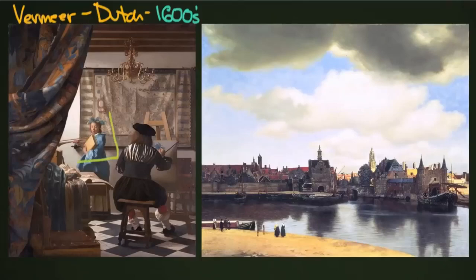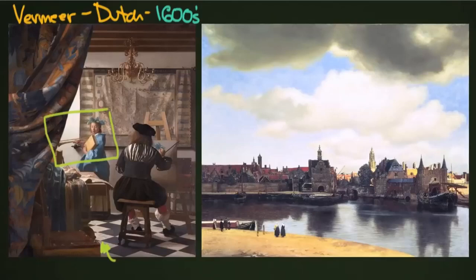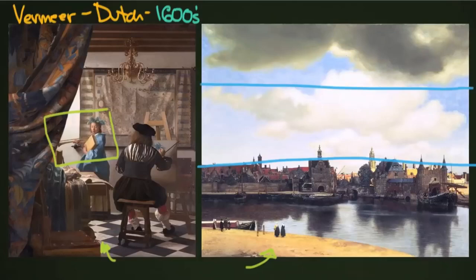Vermeer is famous for the way he portrayed scenes — very clear and set up, following many of the rules that you would now follow as a photographer. This is actually a self-portrait of sorts, which he called 'The Art of Painting.' The image to the right follows many traditional rules of composition, including what's called the rule of thirds — the horizon sits on one of the thirds, and the people fall on a thirds line as well.